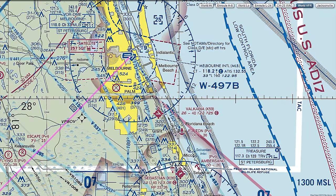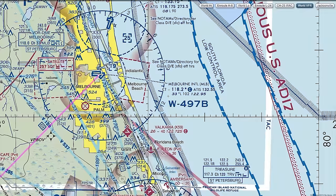Approaching Melbourne, we see it's another part-time tower, so we'd check the chart supplement or AFD for Class D/E surface effective hours to know if the tower is open. If it is, we'd call 10 miles out: 'Melbourne Tower, Cherokee 99007 Whiskey, 10 miles to the southwest with information delta.' If the tower is closed, we'd just listen to ATIS and contact CTAF. The airport elevation is 33 feet, lighting is pilot-controlled, and the longest runway is 10,200 feet.